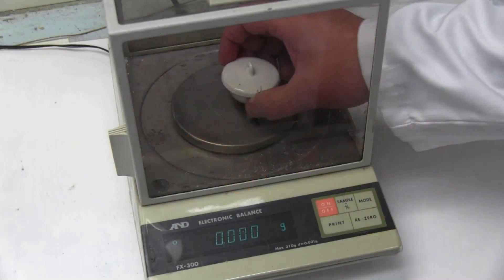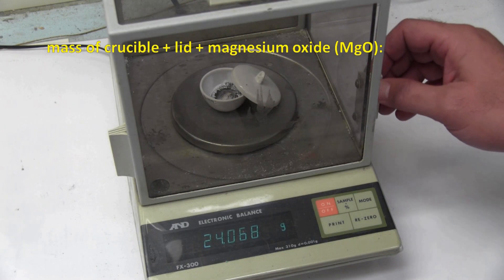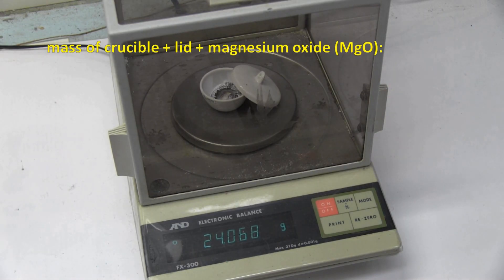If we now re-weigh the crucible, its lid, and the magnesium oxide, we find that the combined mass has increased to 24.068 grams.